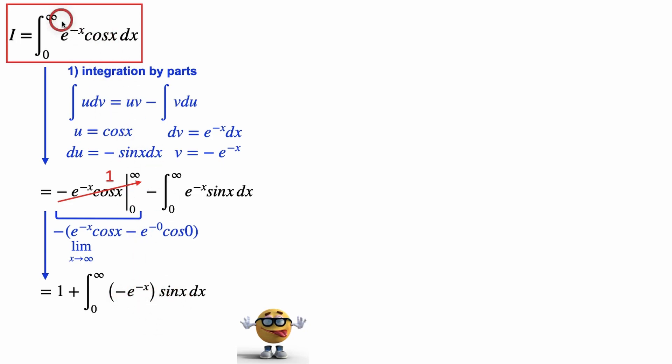Now it looks like we didn't do anything here. It looks like we just traded one problem for another, exchanged a cos for sine, and this is the tricky part. We're going to do integration by parts again.